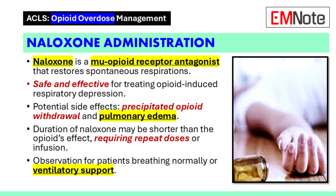Harmful effects of naloxone include precipitating opioid withdrawal and sudden onset pulmonary edema, which can be severe but responds readily to positive pressure ventilation. Because the duration of action of naloxone may be shorter than the respiratory depressive effect of the opioid, particularly long-acting formulations, repeat doses of naloxone or a naloxone infusion may be required.